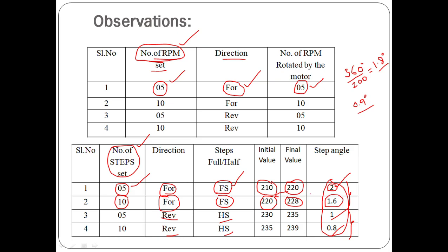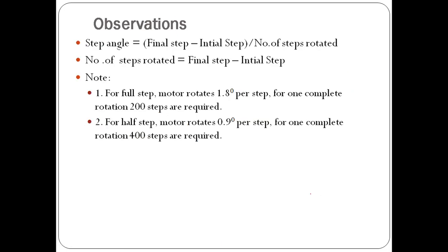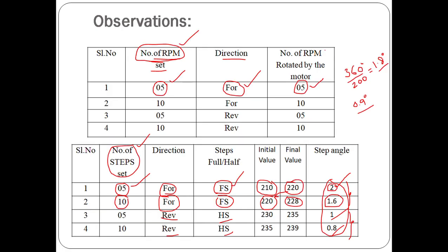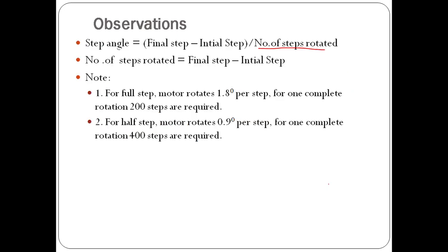You should note that the step angle should be exactly 1.8 degrees for full step and 0.9 degrees for half step, but you record whatever step angle you actually get. The step angle formula is: step angle equals final step minus initial step, divided by number of steps rotated. For example, 220 minus 210 is 10, divided by 5 steps equals 2 degrees.